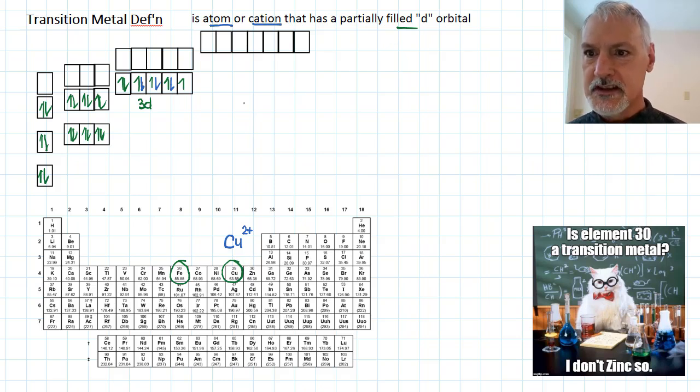Let's finish off by taking a look at the element zinc for a moment. Now, if we go back to zinc's configuration, it would look like this, and it would be 3d10, completely filled. And when zinc forms an ion, it tends to lose these two from the 4s. And as a result, both the atom and the ion don't fulfill this requirement. So as a result, zinc is not considered to be a transition element.